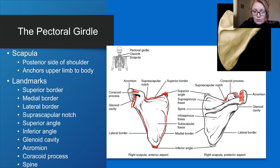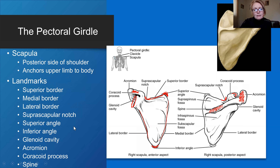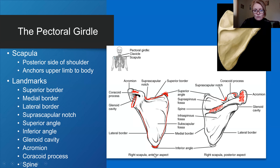We also have the spine of the scapula, which you can palpate when you touch your shoulder. There are fossae important for muscles: the supraspinous fossa above the spine, the infraspinous fossa below the spine — associated with the supraspinatus and infraspinatus muscles — and on the anterior part of the scapula, the subscapular fossa, which is associated with the subscapularis muscle.